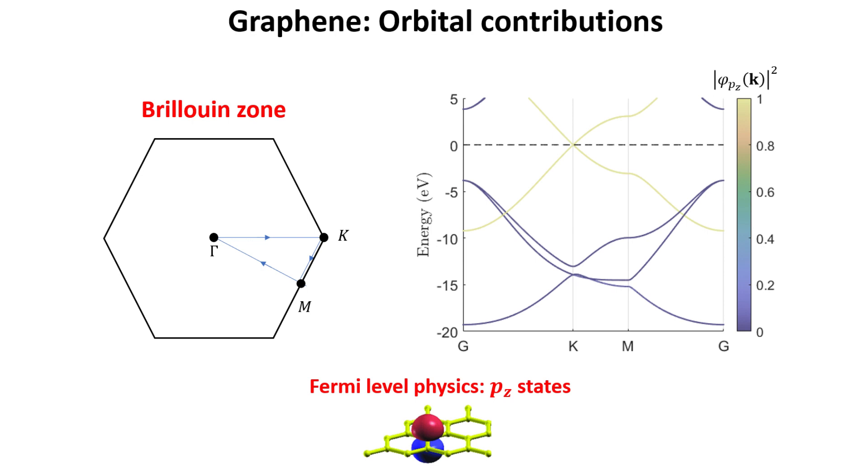In investigating the band structure of graphene along the Brillouin zone path shown, we saw that two bands cross at the Fermi level at the K point.